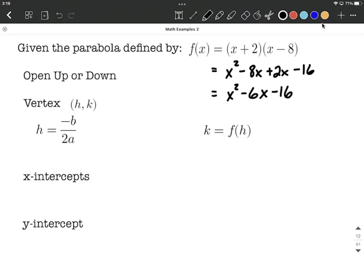To determine whether it opens up or down, we're going to look at the value for a. Now a is going to be the coefficient in front of that leading term. So in our case, that's a positive 1. Because it's positive, this is going to open up.